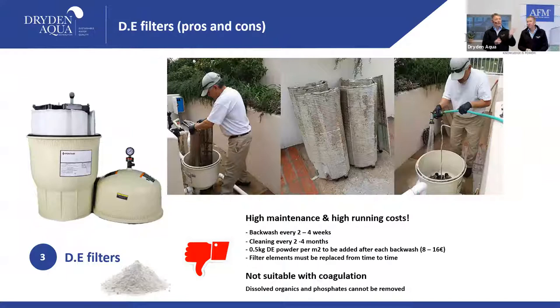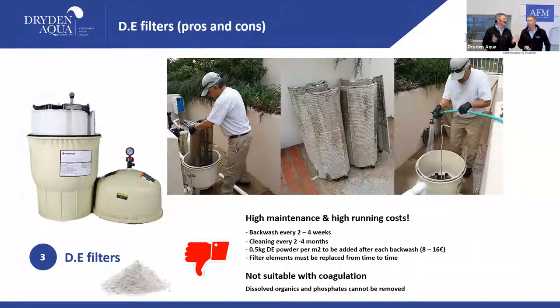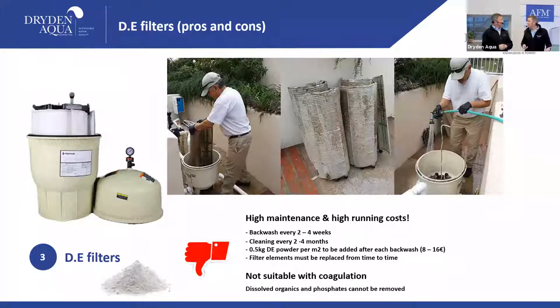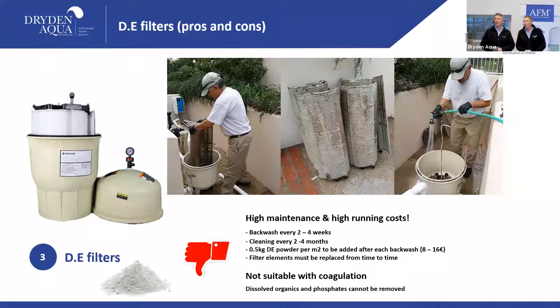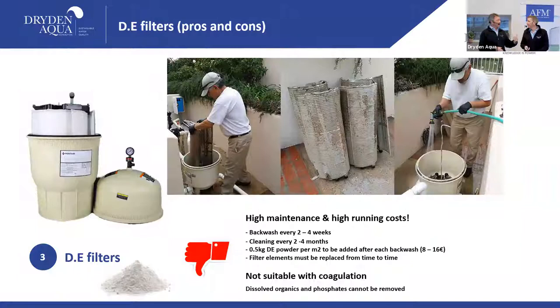DE filters should run at three to six meters per hour — around five on average. For a 10 m³/hr turnover rate you'd need one to two kilograms of DE every two to four weeks, each time pressure increases by 0.2–0.3 bar. There's an ongoing cost and you're handling powder that's not healthy to inhale. After a year or two, the maintenance burden and associated costs diminish the initial excitement.